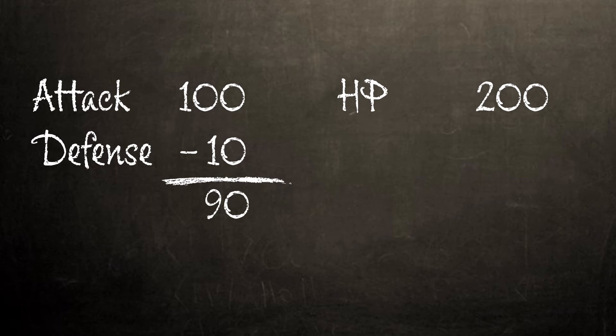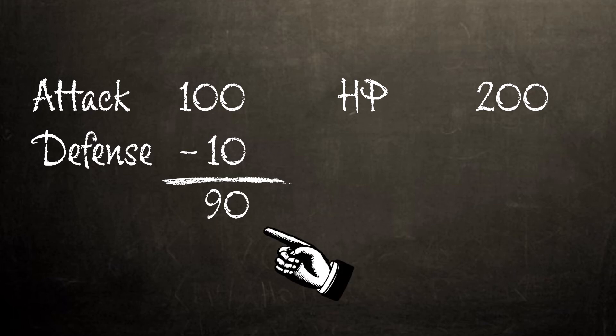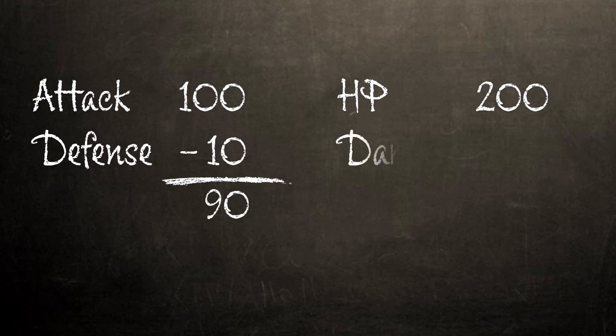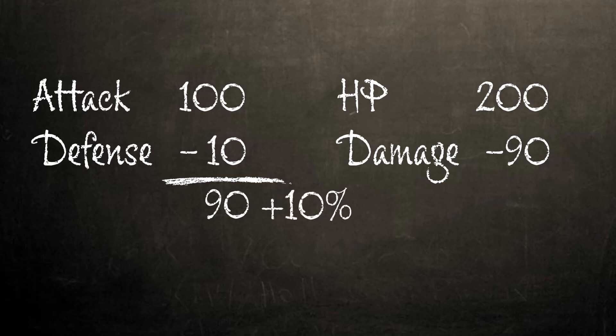Now, what about that stat that says it increases the damage you deal to an opponent? Isn't that just the same thing as the attack stat? Well, not exactly — it's a bit different. Previously, I compared your attack to the opponent's defense and HP; this is an example of damage. The difference between your attack and your opponent's defense determines the amount of HP they'll lose. When you increase your damage stats, that percentage increase is added directly to the amount of damage they take. There are also stats that reduce the damage you take from your opponent, which work the same way by subtracting a percentage of the damage your troops take.